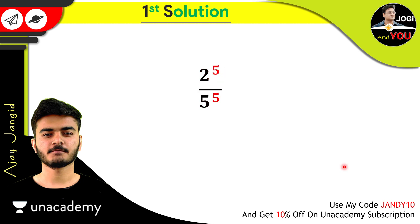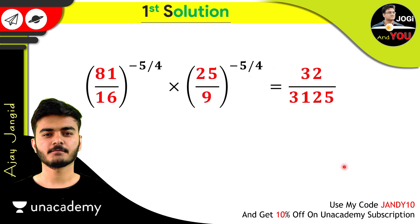Now we have 2 to the power 5 upon 5 to the power 5. So just calculate both these numbers. And we got 32 upon 3,125. This is the value of this expression. So clearly, it's our required answer.